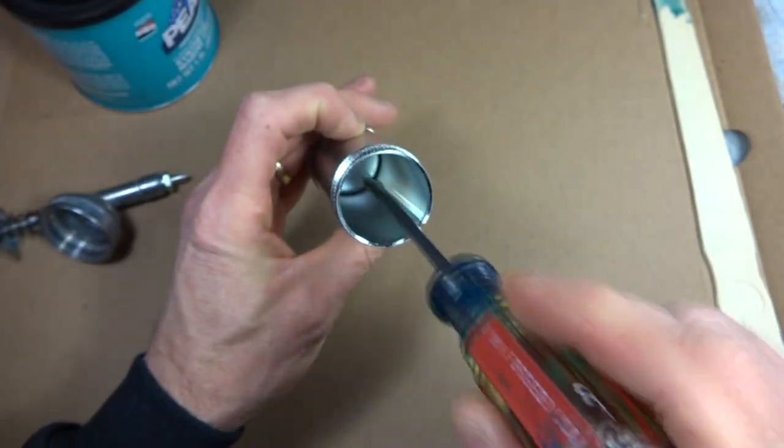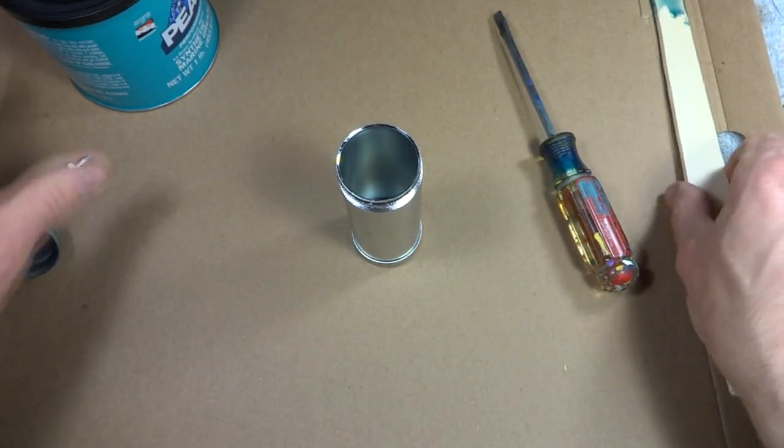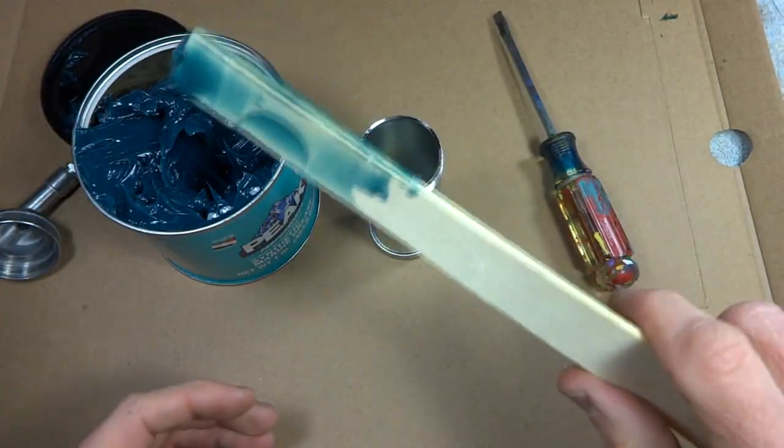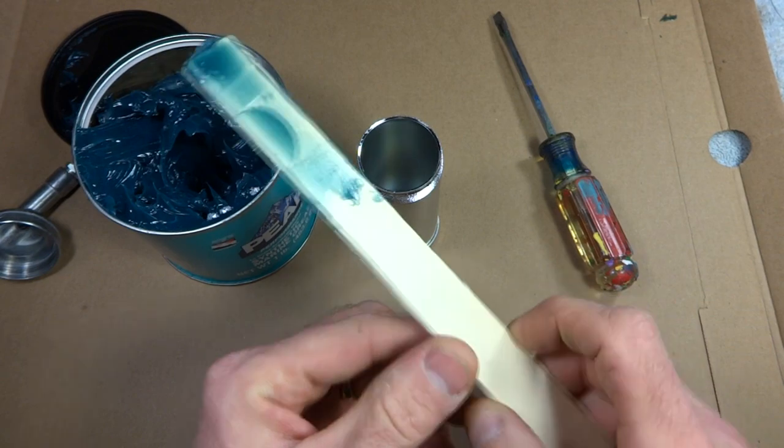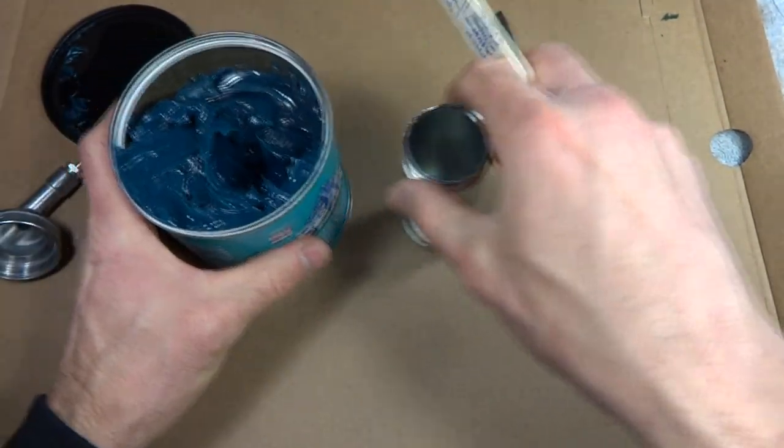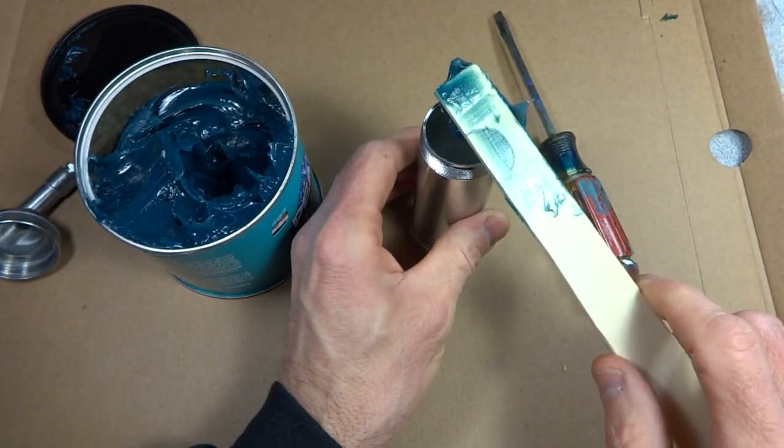So what you want to do is go ahead and push it down so it's all the way at the bottom. And then I have like a paint stirrer here. I kind of split it down the middle so it's just a little bit narrower. Just go ahead and scoop some out and you want to fill this thing completely.